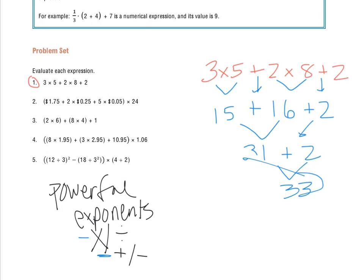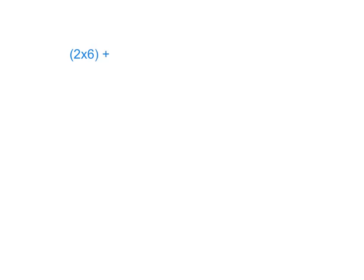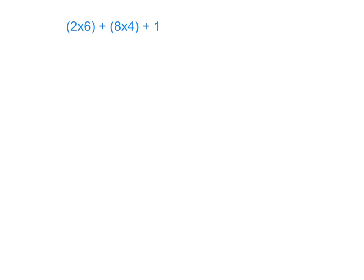We'll take a look at number 3. I see I have parentheses: inside, I have 2 times 6, plus — in parentheses again — 8 times 4, and then a plus 1 on the outside. I have a set of order of operations to work with, and the first step is brackets, grouping symbols, or parentheses.